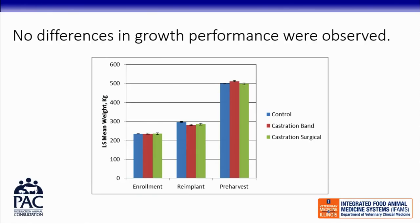We weighed cattle at three time points: enrollment, re-implant at approximately 90 days prior to harvest, and pre-harvest about six days before slaughter. These are least square means. There was absolutely no difference between treatments — the steers and castrates grew similarly, with no statistically significant differences. So over approximately 90 days between enrollment and re-implant, there was no difference in growth rate from any of the castration procedures performed.